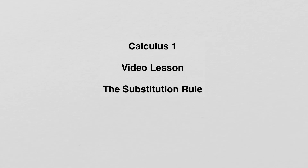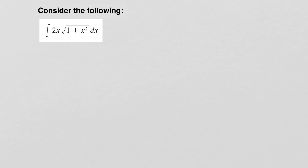The substitution rule. Let's consider the following integral: the integral of 2x times the square root of 1 plus x squared. This is a function that we do not know how to take the integral of.